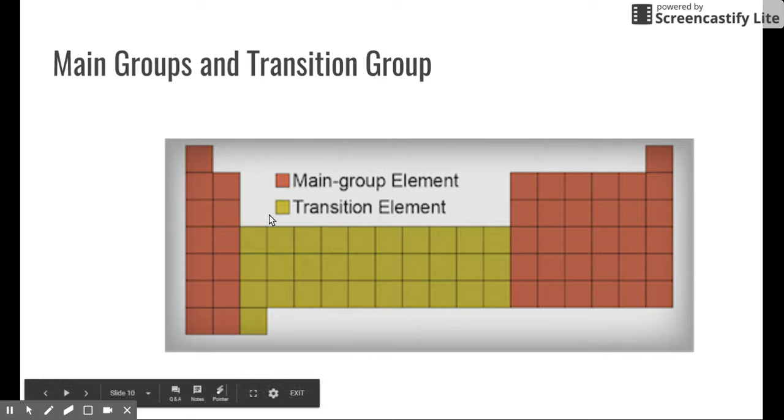Now there's a big gap here, and the ones that sit lower down here are called the transition elements. Now in our class, we will talk about the transition elements a little bit, but for the most part, a lot of physical science one is all about main group elements.